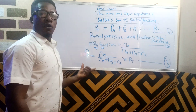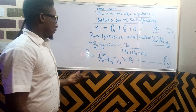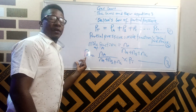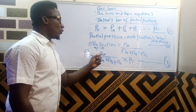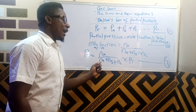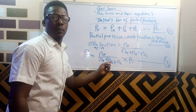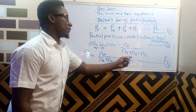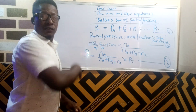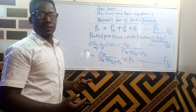When looking for the partial pressure of B, you can say: partial pressure of B is equal to Nb over (Na plus Nb plus Nc) times Pt. If looking for that of C, just insert Nc in the same way.